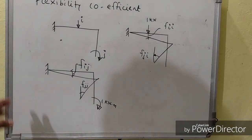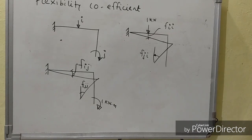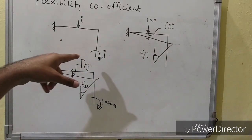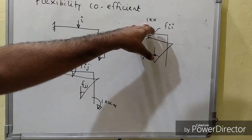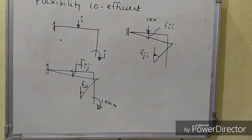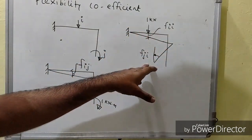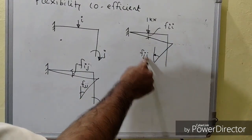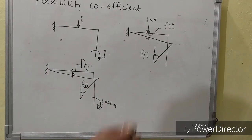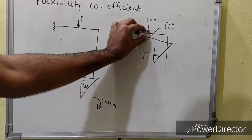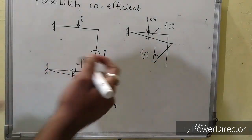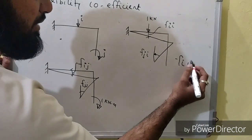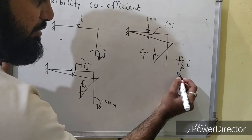First, we need to apply a unit load at coordinate I with no other load on the structure — we apply loads one by one. When I apply a unit load at coordinate I, this will be the displaced position of the structure. Here we can see we are getting the deflection at coordinate I and the rotation at coordinate J.